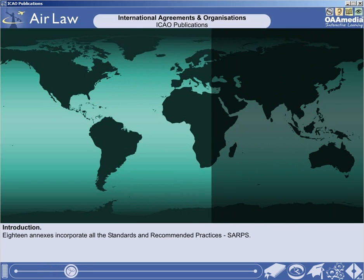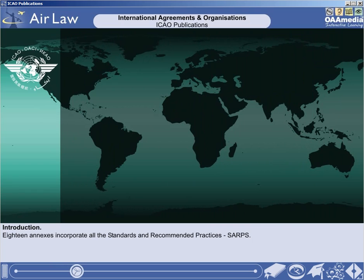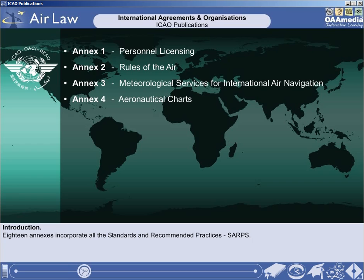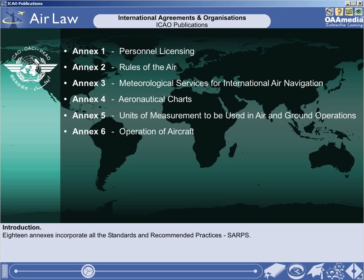You are required to be able to identify the ICAO annexes and their content. The 18 annexes are: Annex 1 – Personnel Licensing, Annex 2 – Rules of the Air, Annex 3 – Meteorological Services for International Air Navigation, Annex 4 – Aeronautical Charts, Annex 5 – Units of Measurement to be Used in Air and Ground Operations.